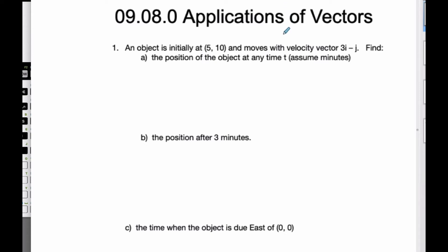Today we're going to look at applications of vectors. I have an object that's initially at (5, 10) and it moves along with velocity vector 3i minus j, so (3, -1). Find the position of the object at any time t, assuming that it is in minutes.